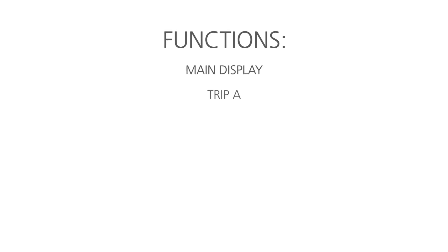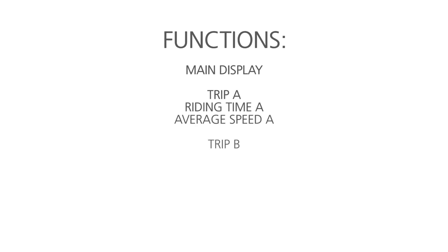The following functions are integrated: Main Display, Trip A, Riding Time A, Average Speed A, Trip B, Riding Time B, Average Speed B, RPM and Max Record. The button that comes with the RevCounter allows you to switch between functions.